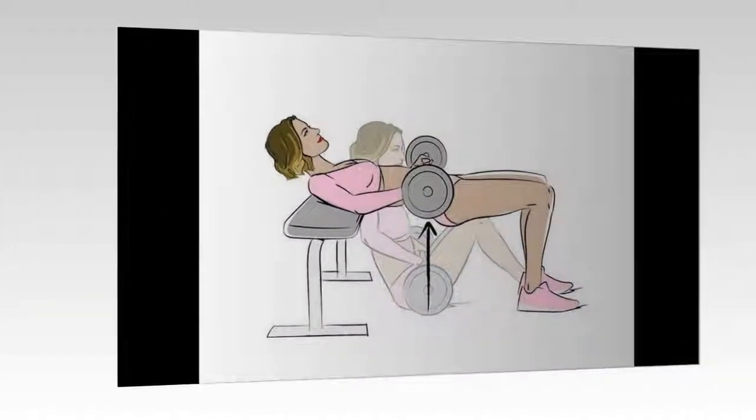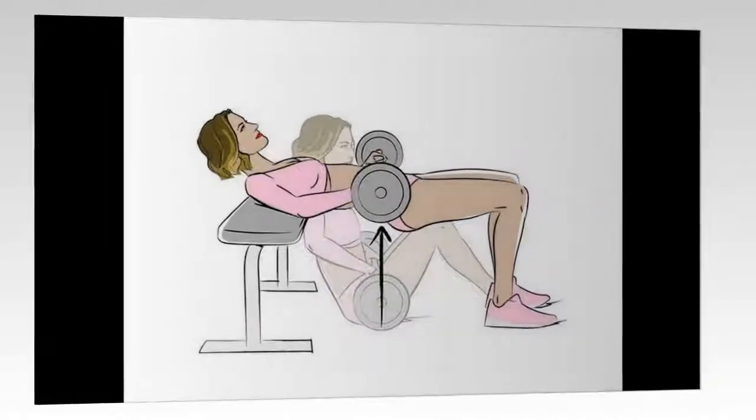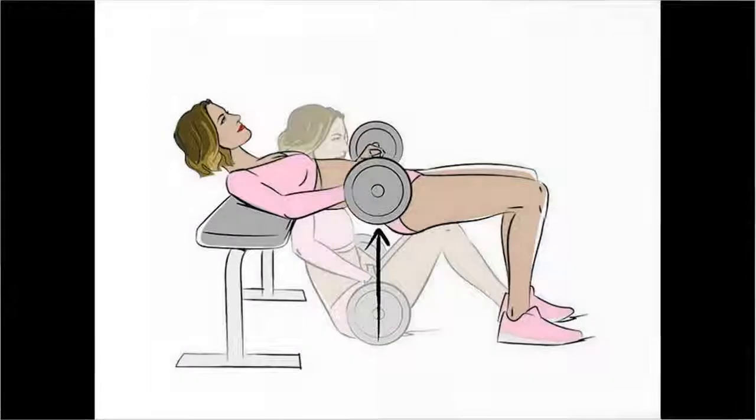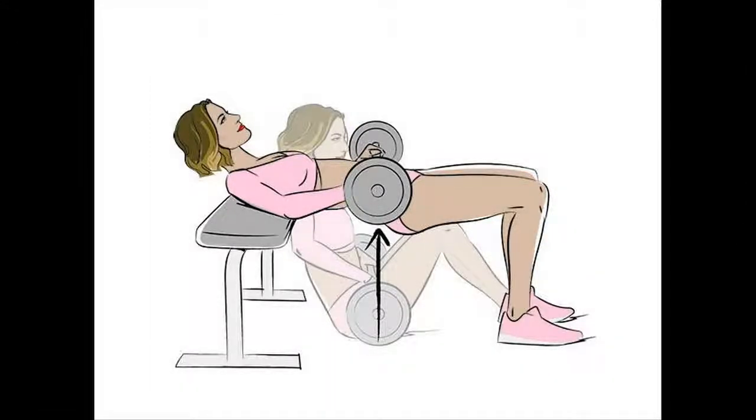4. Seated Shoulder Press. Targets shoulders. Do 3 sets of 13-15 reps. If you only make it to 11, use a lighter weight. If you smash 15, use a heavier weight.